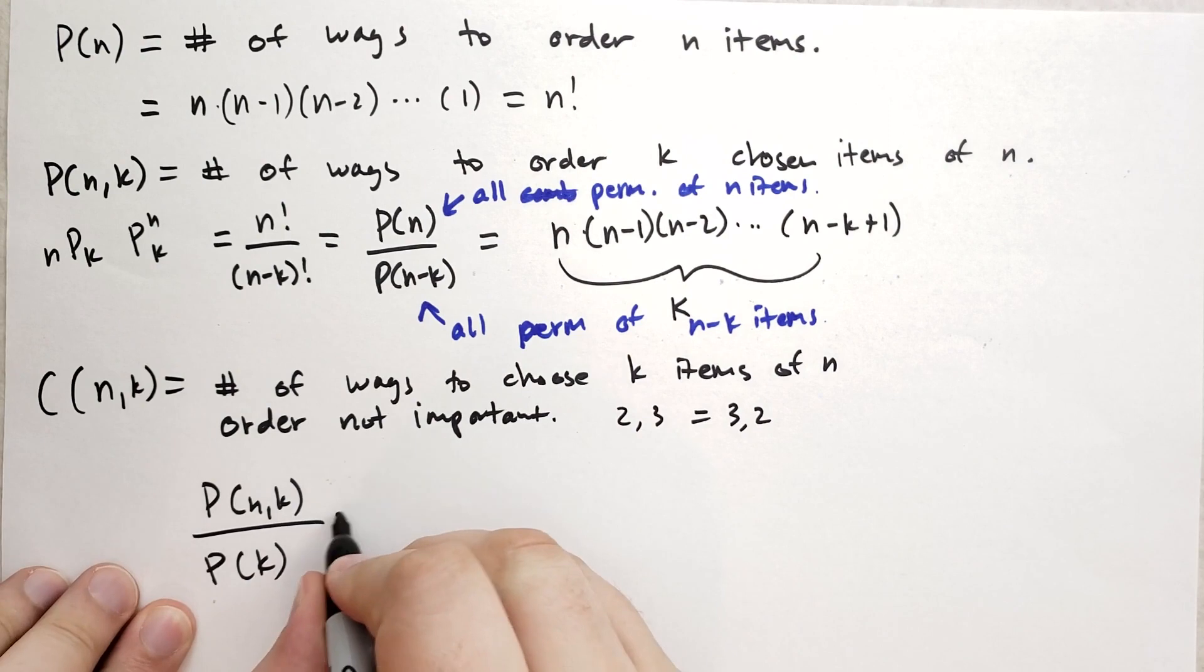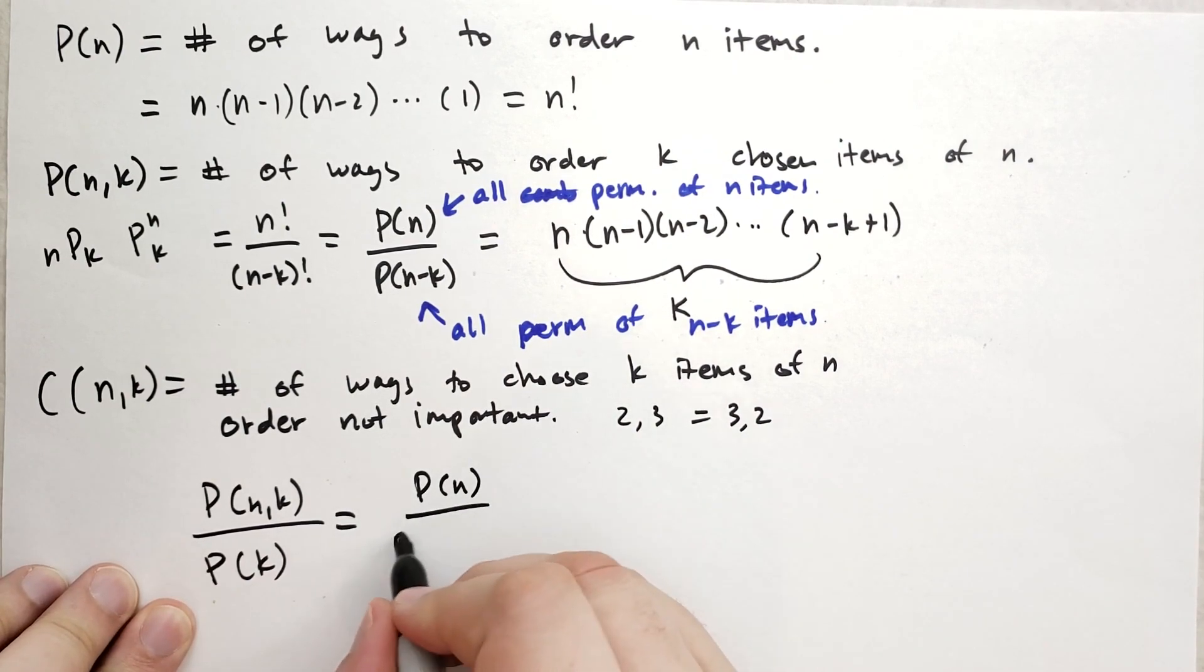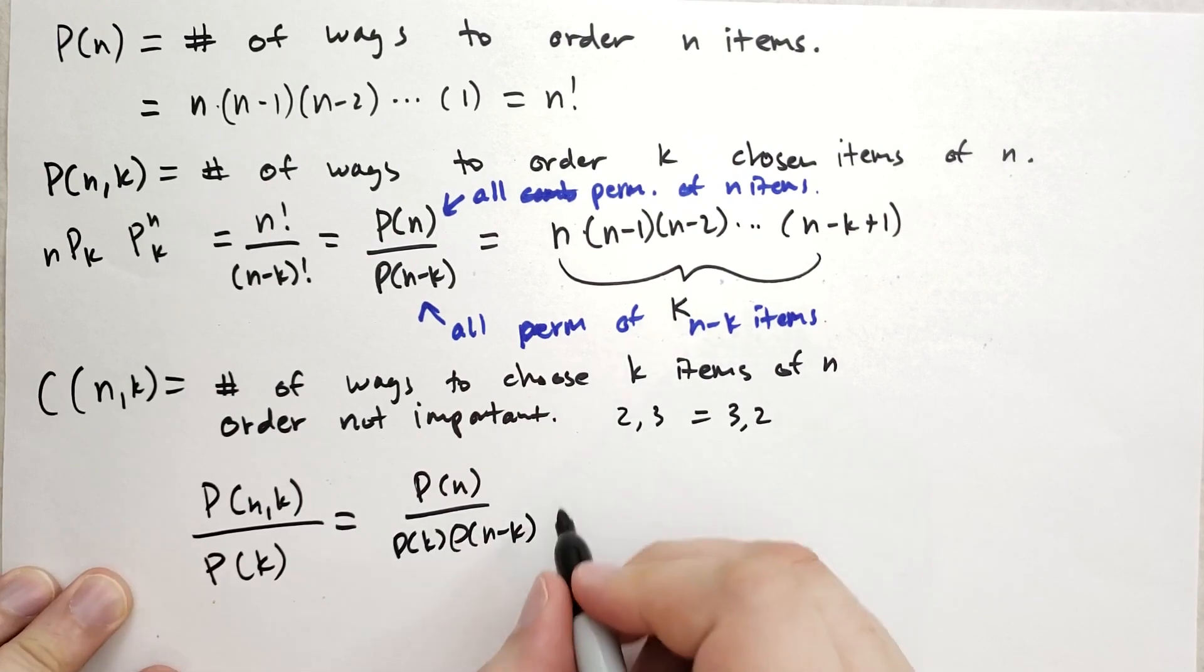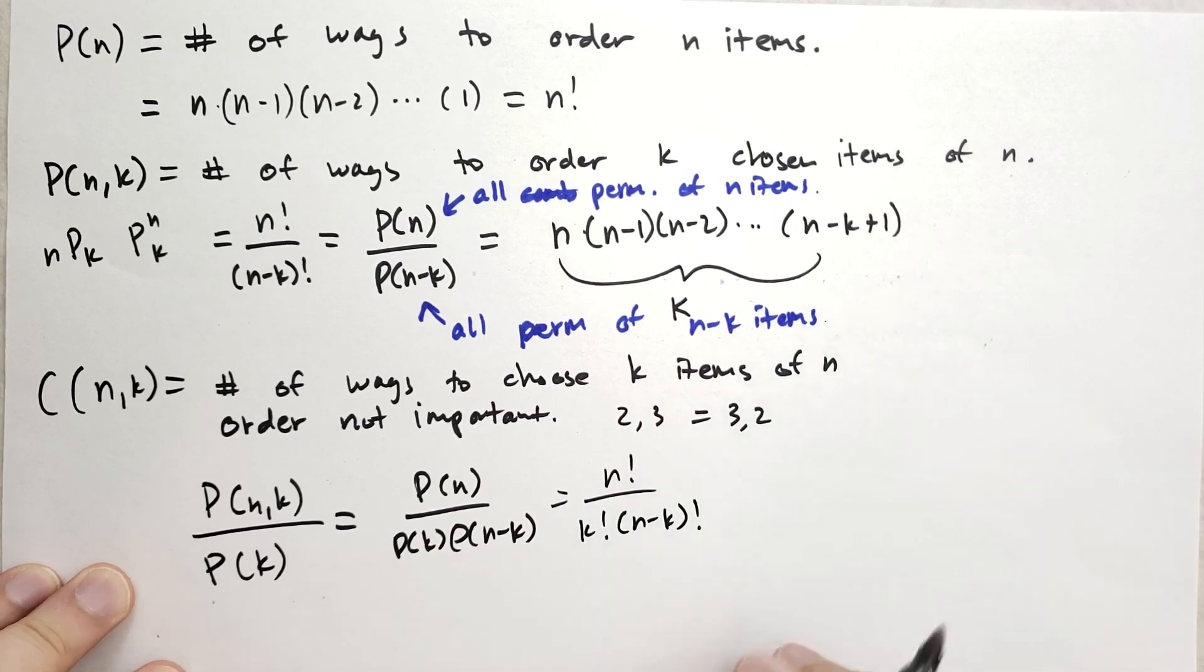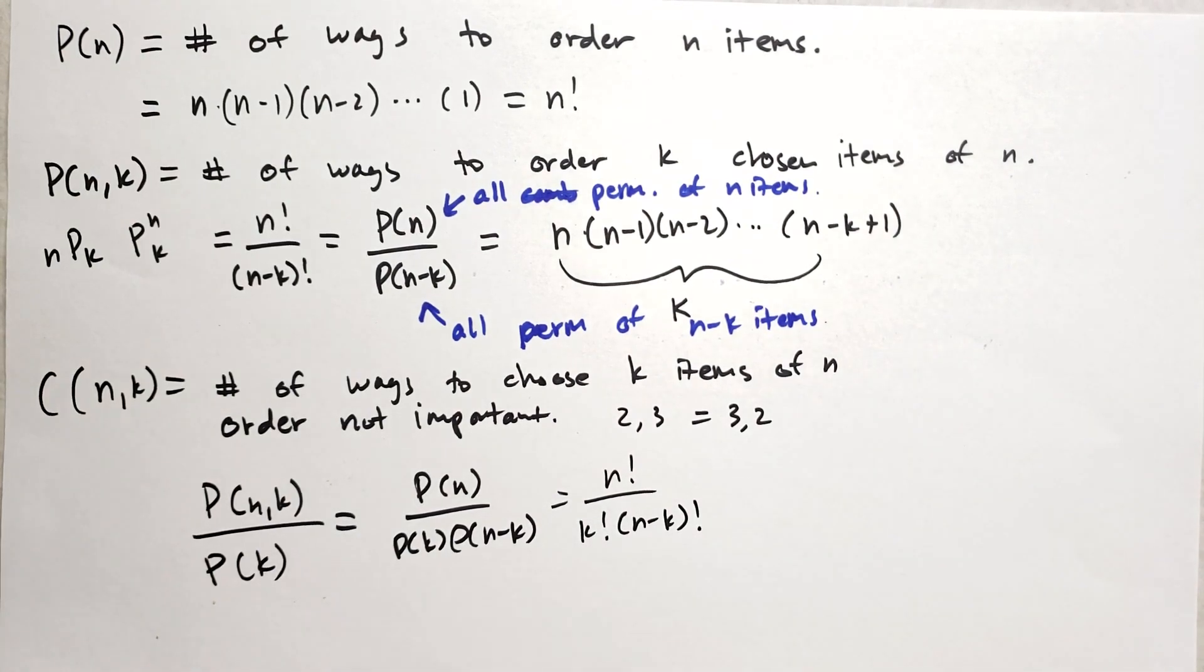And you end up with P of N over P of K times P of N minus K. Which, you know, we write as N factorial over K factorial times N minus K factorial. And this is probably the best way that I can explain this to you.